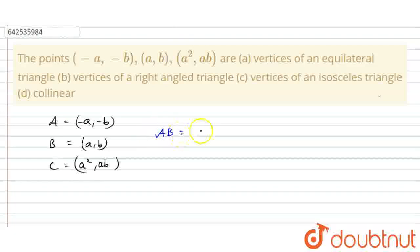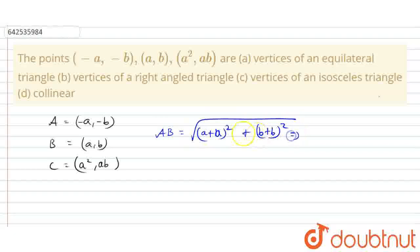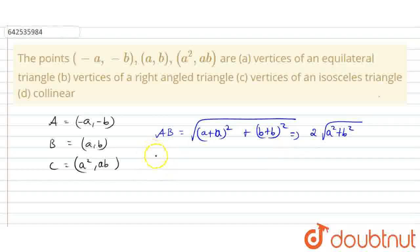So the distance of AB equals the square root of (A + A)² + (B + B)². The value equals (2A)² + (2B)², so I am going to take out 2, giving 2√(A² + B²). So this is the first distance AB.